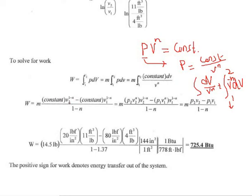Substituting the constant for each state and simplifying, work equals mass times quantity P2 times v2 minus P1 times v1 all divided by 1 minus n. Substituting values: mass is 14.5, P2 is 20 pound force per inch squared, v2 is 11 feet cubed per pound, P1 is 80, v1 is 4 feet cubed per pound, divided by 1 minus 1.37.